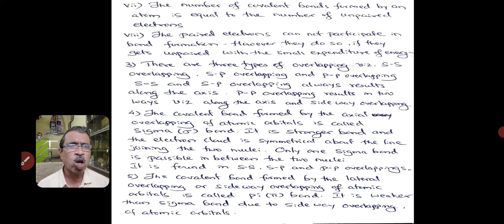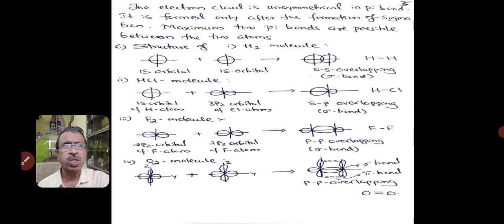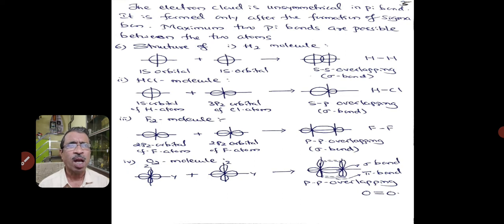The covalent bond formed by the lateral or sideway overlapping of atomic orbitals is called a pi bond. It is weaker than the sigma bond due to sideway overlapping. The electron cloud is unsymmetrical in a pi bond. It is formed only after the formation of a sigma bond. Maximum two pi bonds are possible between two atoms, and only one sigma bond is possible between two atoms. Without the sigma bond, there are no pi bonds at all.